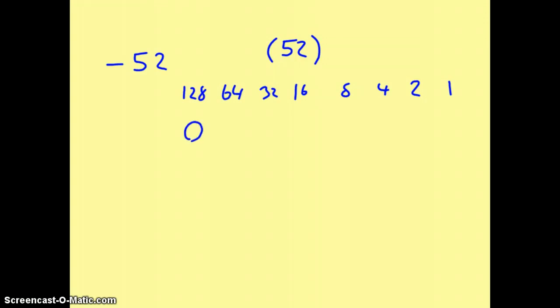So, no 128's, no 64's. There's a 32 in there, which leaves 20 left over, so therefore 16 and 4. And this then gives us 52. So this is 52, positive 52 as a pure binary integer.